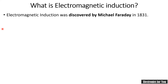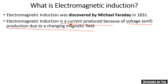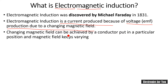Electromagnetic induction was discovered by Michael Faraday in 1831. Electromagnetic induction is the current produced because of the voltage or EMF produced due to the changing magnetic field. There will be a change in magnetic field, and this change in magnetic field will cause the current — that is why it is known as electromagnetic induction.